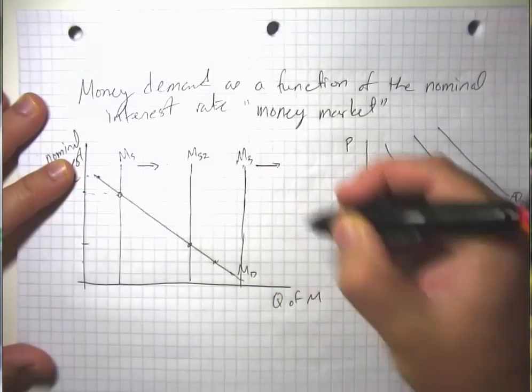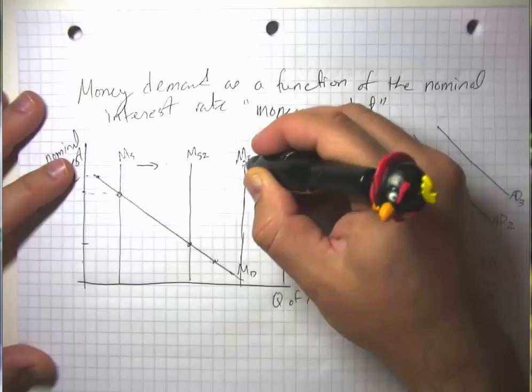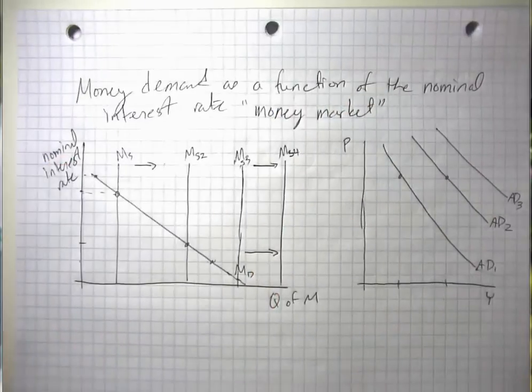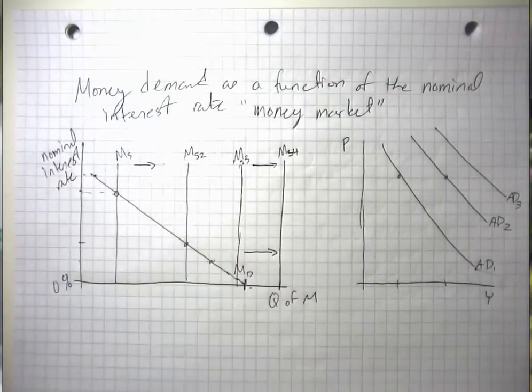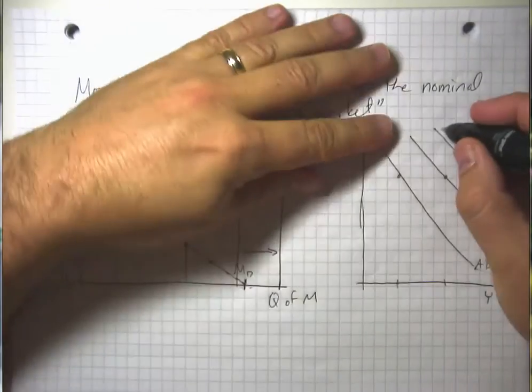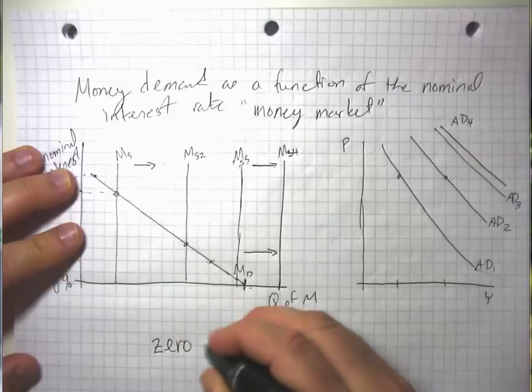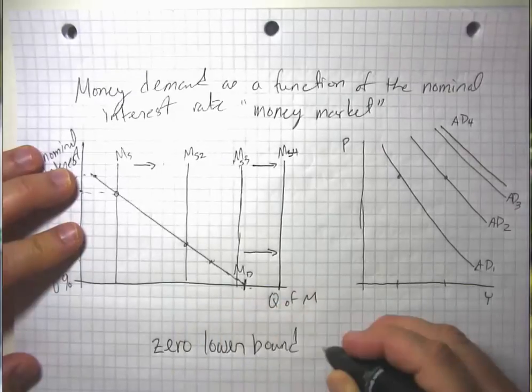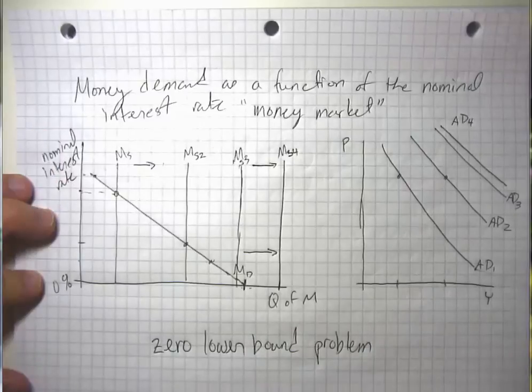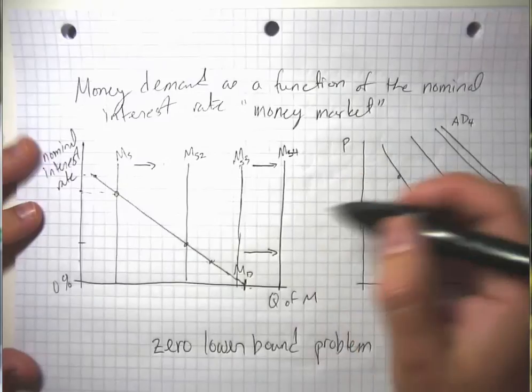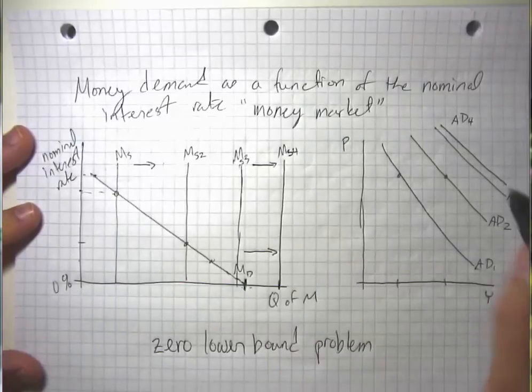But notice there's a potential issue that comes up that we might eventually run into a situation where we push the money supply out and we push it out so far that it's greater than the amount people demanded. And so interest rates are already at 0% and further increases in the money supply don't do much to increase aggregate demand. And this is what's known as the zero lower bound problem. The idea is that interest rates are bounded. They're limited at 0. That's as low as they can go.